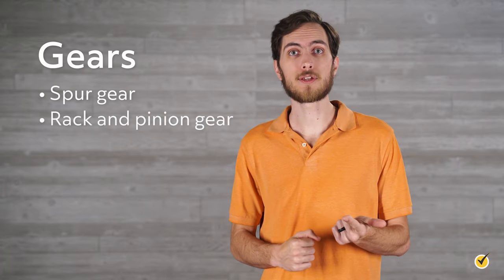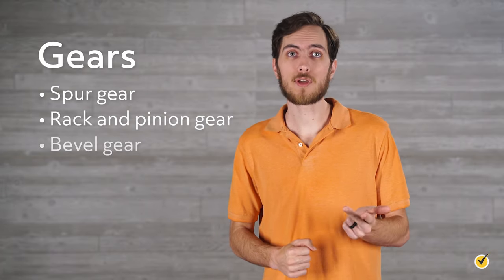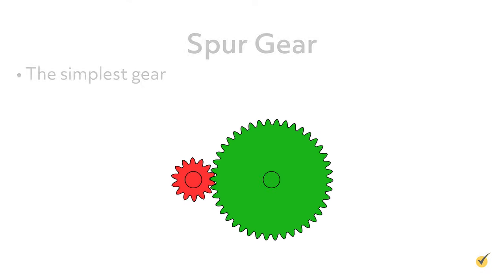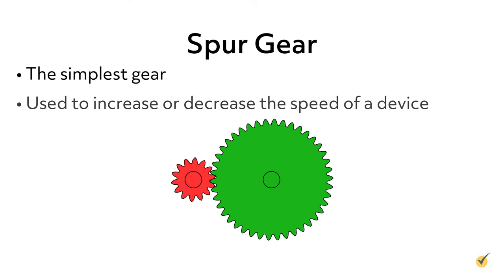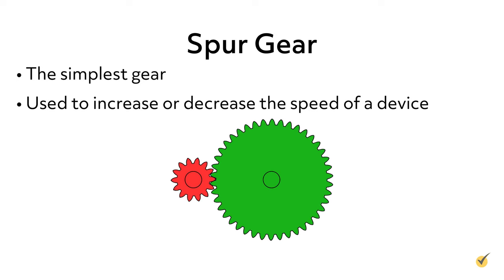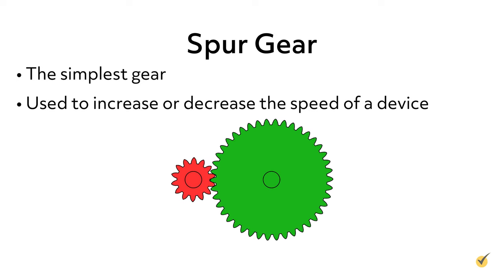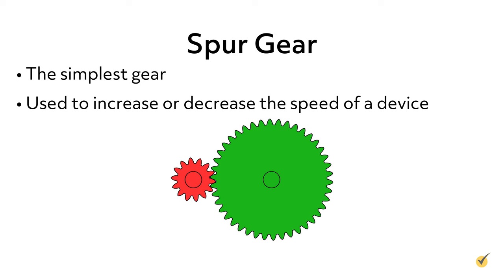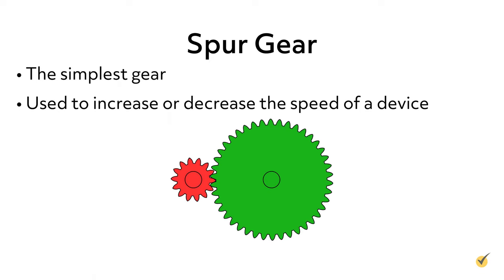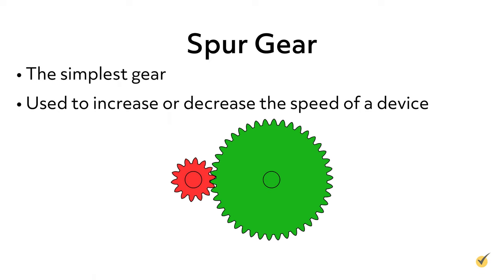There are four basic types of gears: the spur gear, rack and pinion gear, bevel gear, and worm gear. The simplest gears are the spur gears, which are generally used to increase or decrease the speed of a device. Spur gears have teeth that are parallel with the axis of the gear and generally lie in the same plane, as shown here.